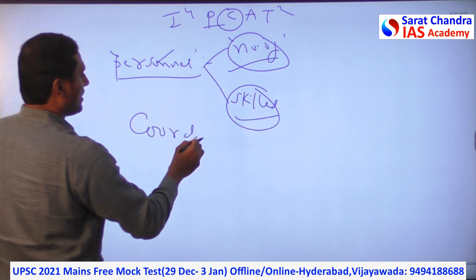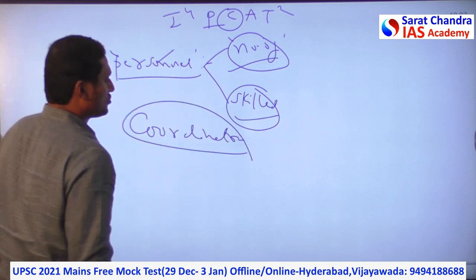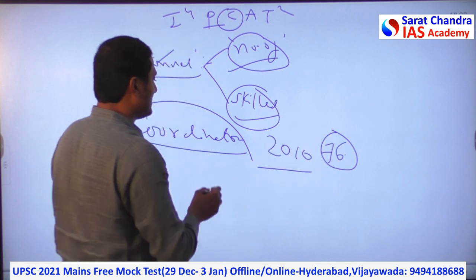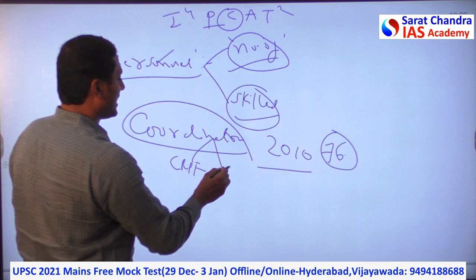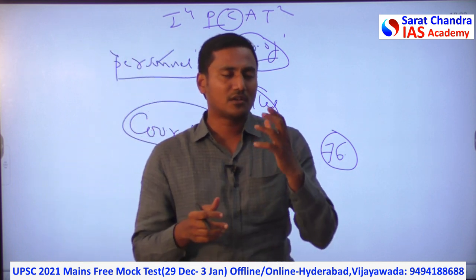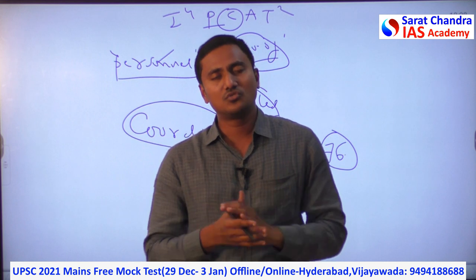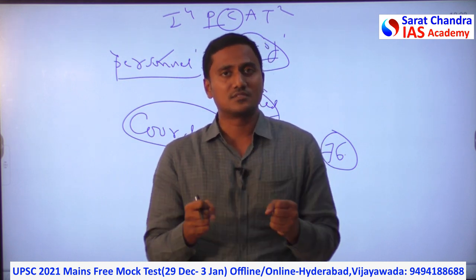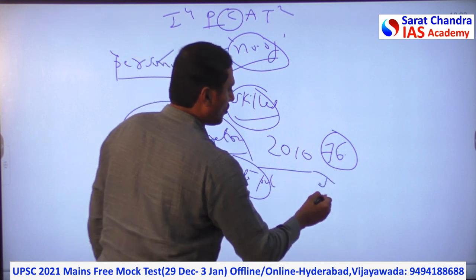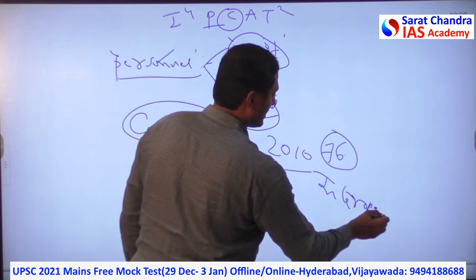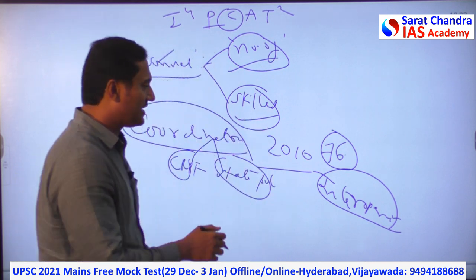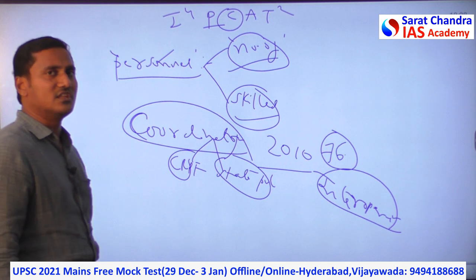Now coordination. In the 2010 Dantewada attack in Chhattisgarh where 76 CRPF personnel were killed, the coordination between CRPF and the Chhattisgarh state police was lacking. Because of that lack of coordination, large-scale deaths occurred. India has many teams, departments, and agencies — they need to coordinate, there should be interoperability. They have to share intelligence mutually and work in an integrated fashion. That is very important to solve any security threat India is facing.